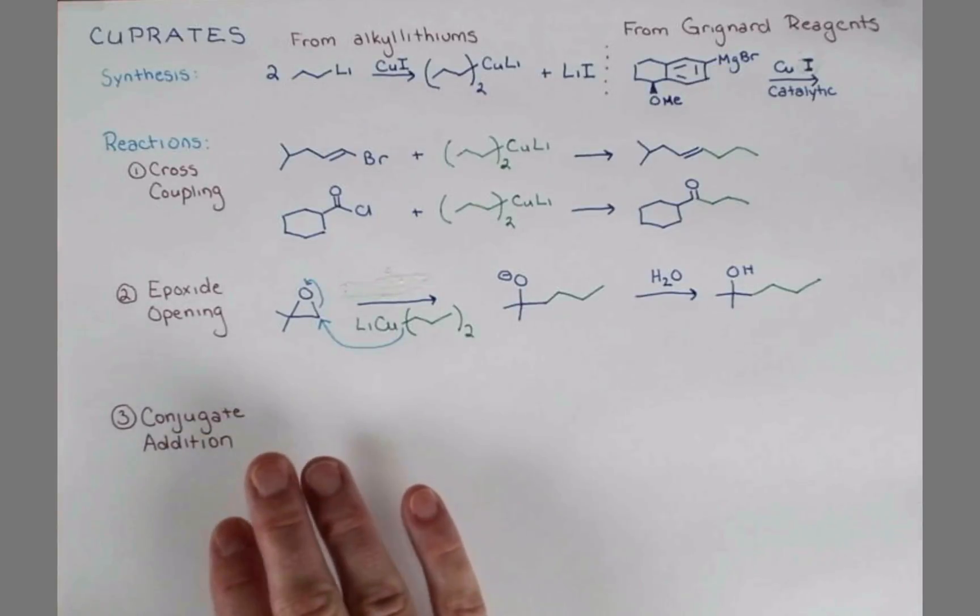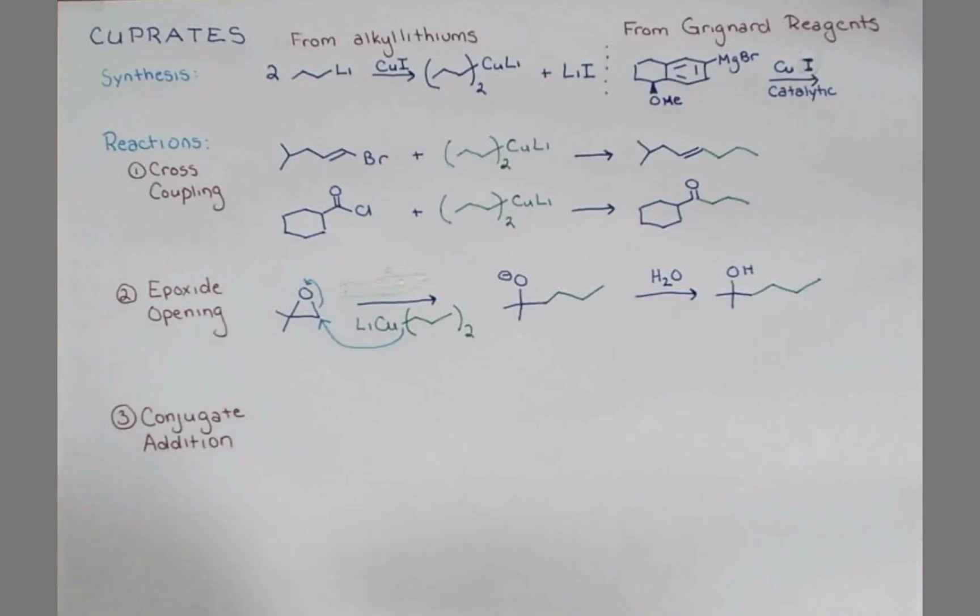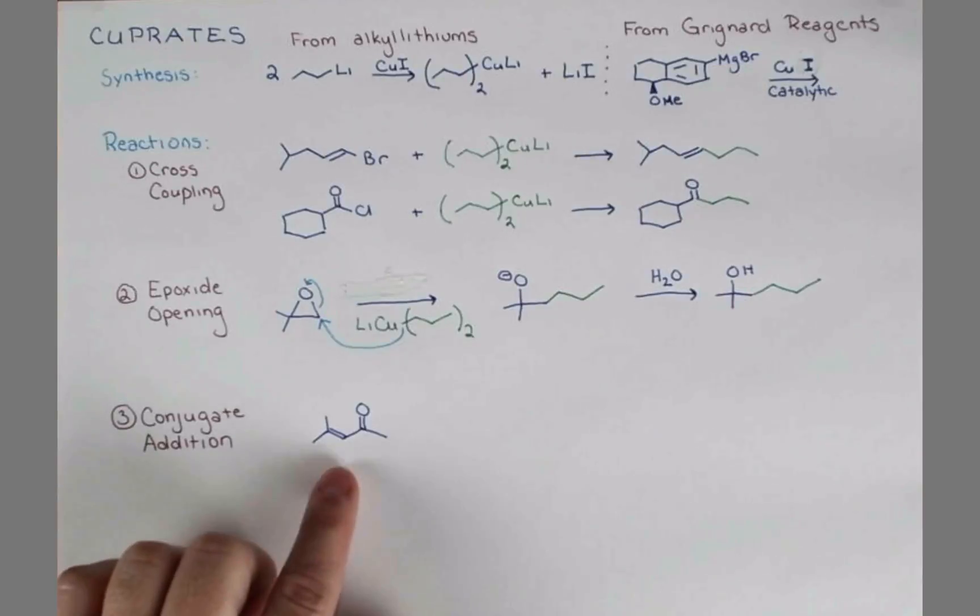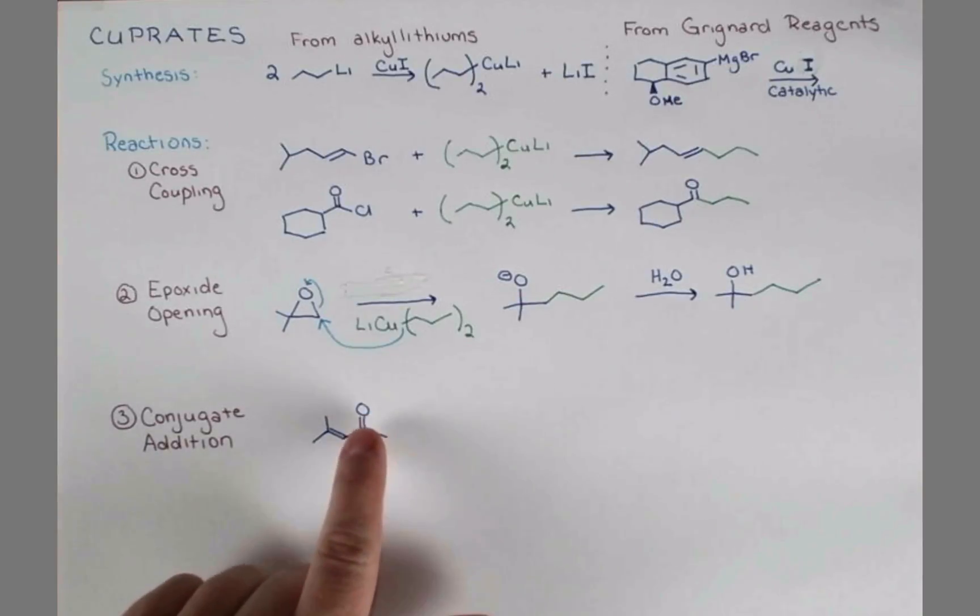The final reaction I want to tell you about is conjugate addition. This molecule, an enone, has a carbonyl in conjugation with a double bond. Now let's review the reaction that would happen when we treat this with a Grignard reagent or an alkyl lithium.